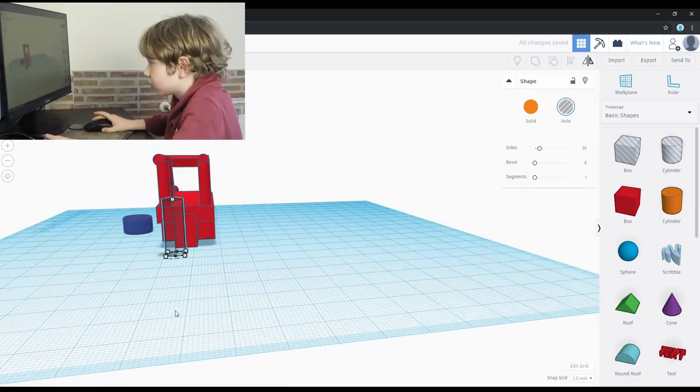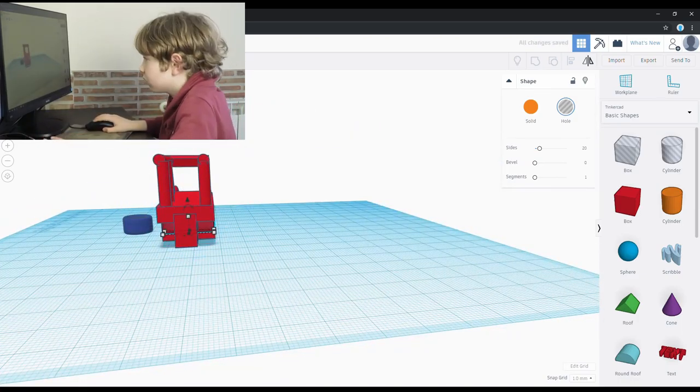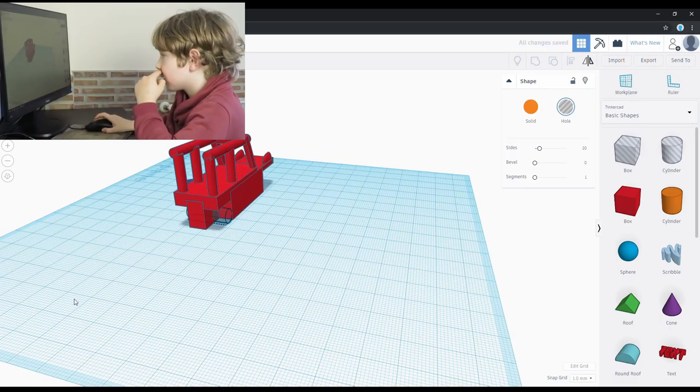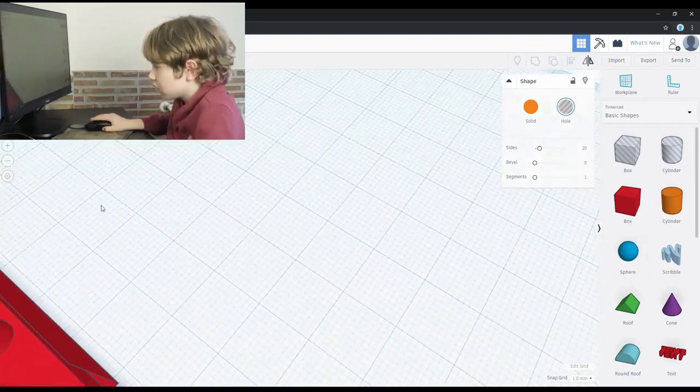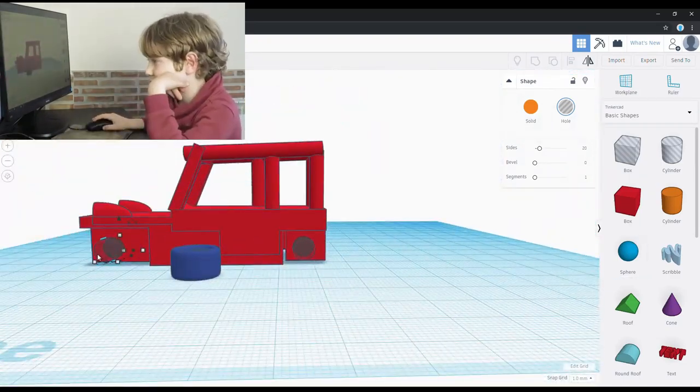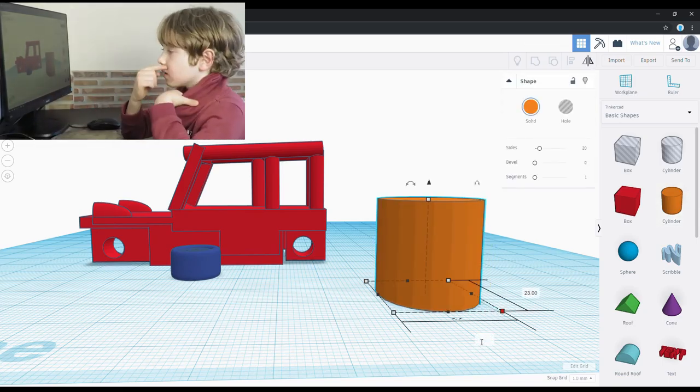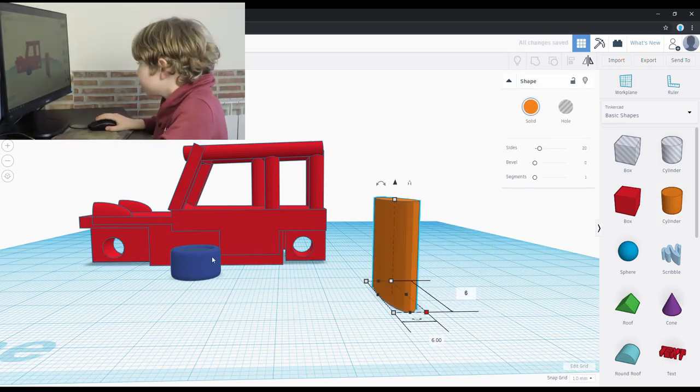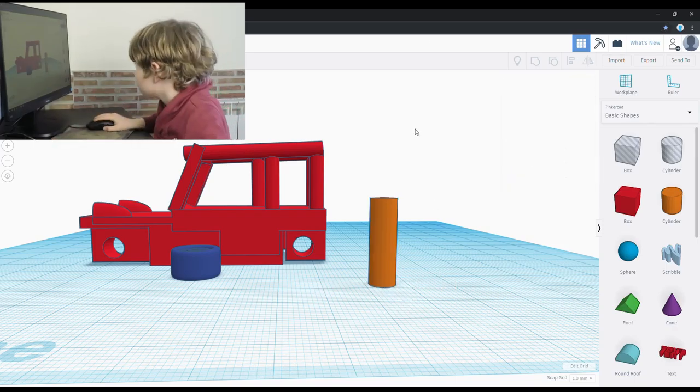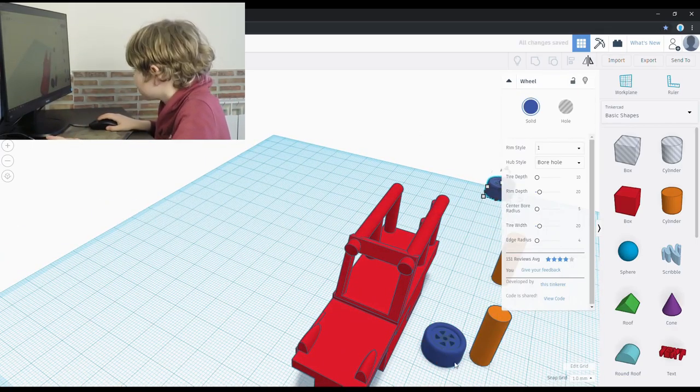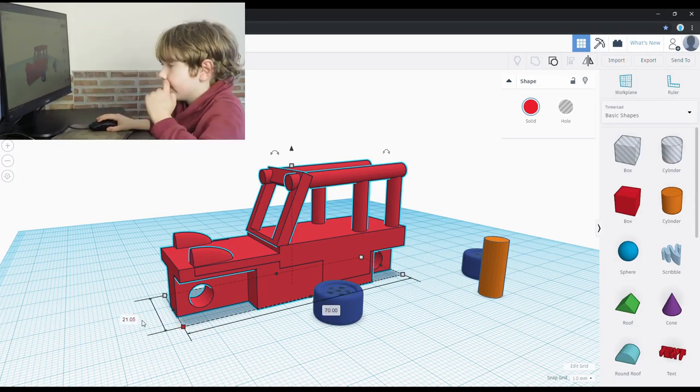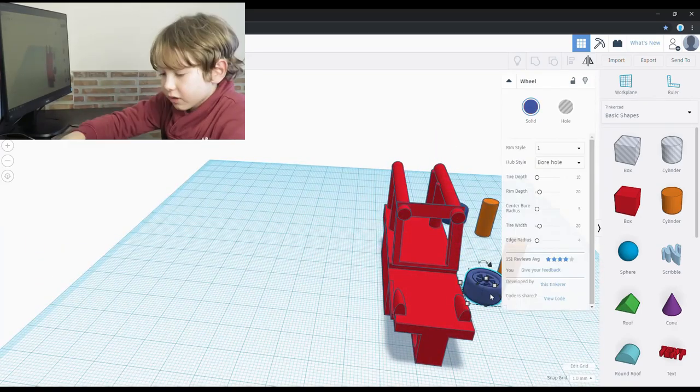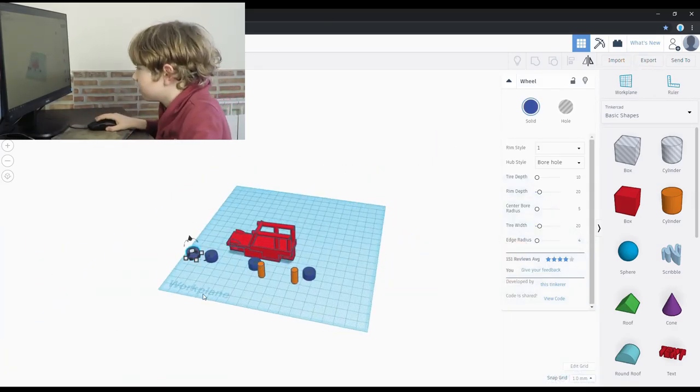I used the cylinder to cut holes for the axles. I made the axles out of cylinders and the wheels from Thinker Garden. Here is the final design.